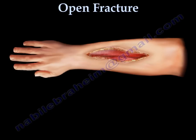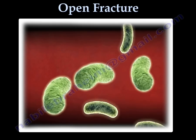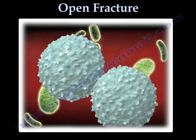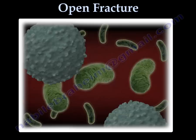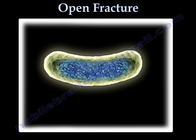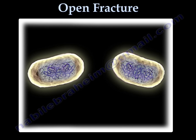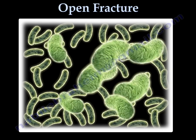Despite the best care, a certain percentage of open fracture injuries will become infected. When the tissues become infected by bacteria, white blood cells are attracted to the infected site, where the bacteria are multiplying and causing inflammation. Bacteria multiply by replicating their DNA and then dividing into two identical bacterial cells. Due to this doubling of bacterial cells, the population of bacteria grows rapidly.